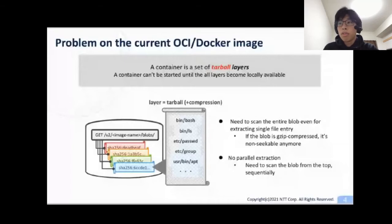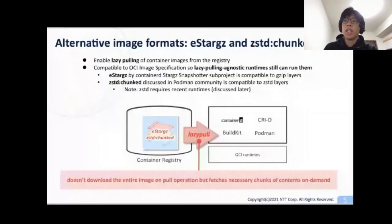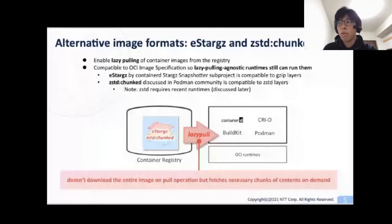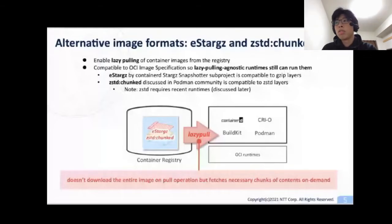For solving this issue, several alternative image formats are discussed in the community. They enable lazy pulling of container images. Lazy pulling here means the runtime doesn't download the entire image on pull operation, but fetches necessary chunks of contents on demand. In other words, the container runtime starts a container without waiting for the image contents to become locally available. Today, I'm going to introduce two of them.